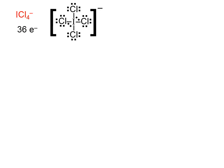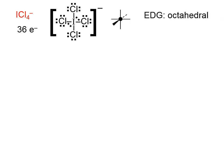This ion has 36 electrons. There is the correct Lewis structure. Counting around the central atom, there are six domains, so the electron domain geometry is octahedral. Four of them are bonding domains, which means the molecular geometry is square planar.